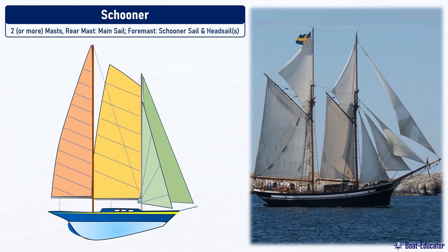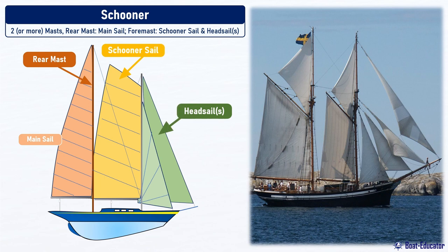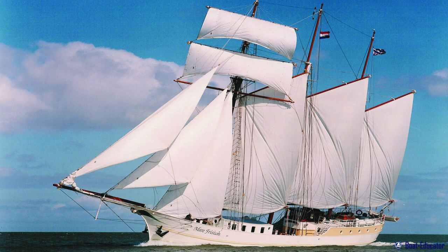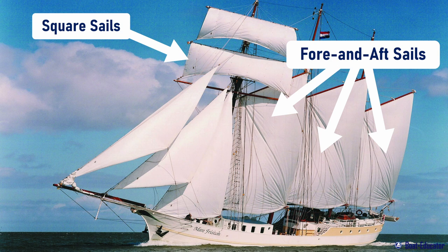Schooner. A schooner is a sailing ship that has two or more masts. Unlike a yawl, the two-masted schooner has a taller aft mainmast and a smaller foremast. The rear mast is the mainmast and carries the mainsail. The foremast has a schooner sail and can carry several headsails. A schooner carries so-called fore-and-aft sails as the mainsail on all masts, meaning sails aligned in the longitudinal direction of the ship, like all modern yachts. The counterpart to this is square sails, which are transverse to the ship, like on the old pirate ships you may know from the movies.